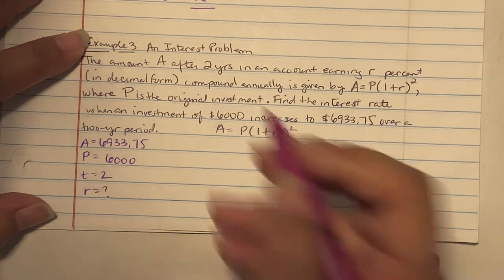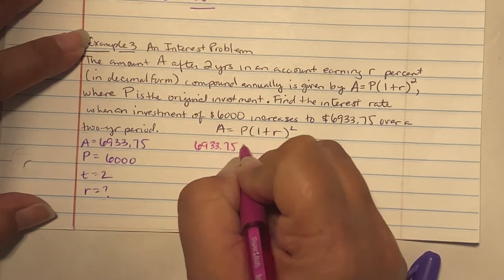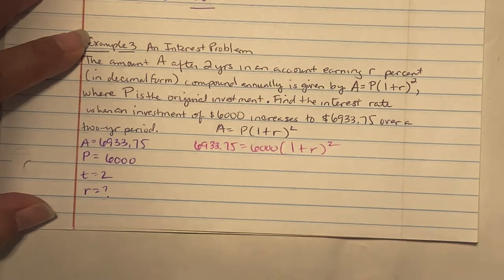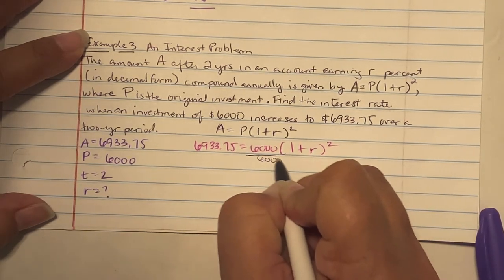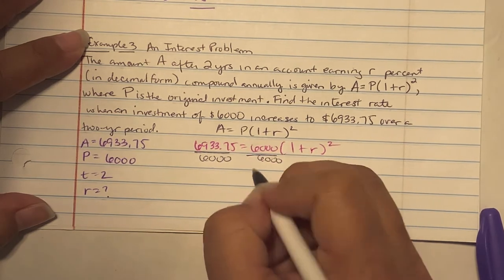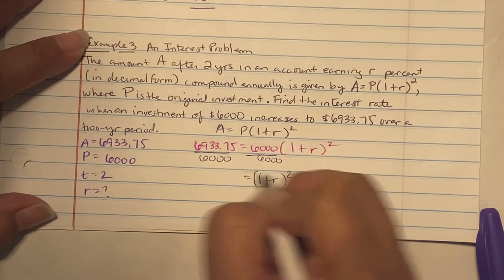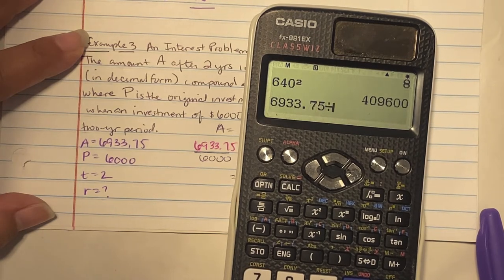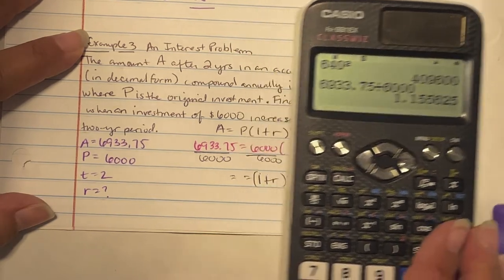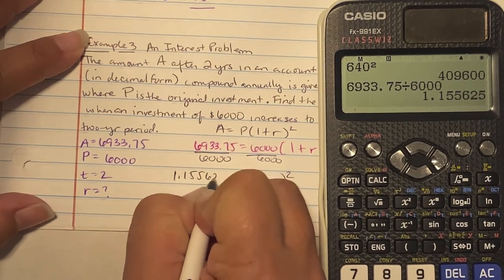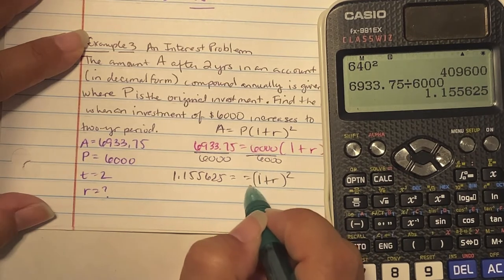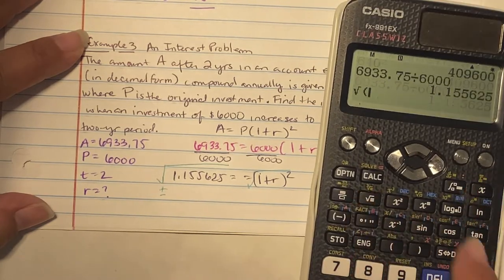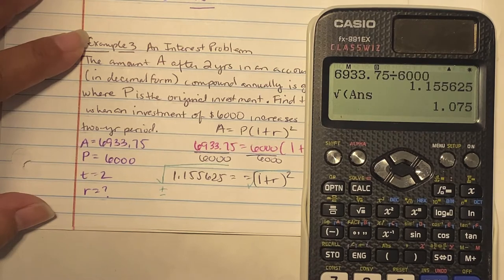We're going to take our formula and replace. So 6,933.75 equals 6,000 times one plus R squared. You're going to divide by 6,000 on both sides. So we have one plus R squared equals 1.155625. Then you're going to apply the square root property. Take the square root of both sides. So you get a plus minus situation. Taking the square root of the answer.